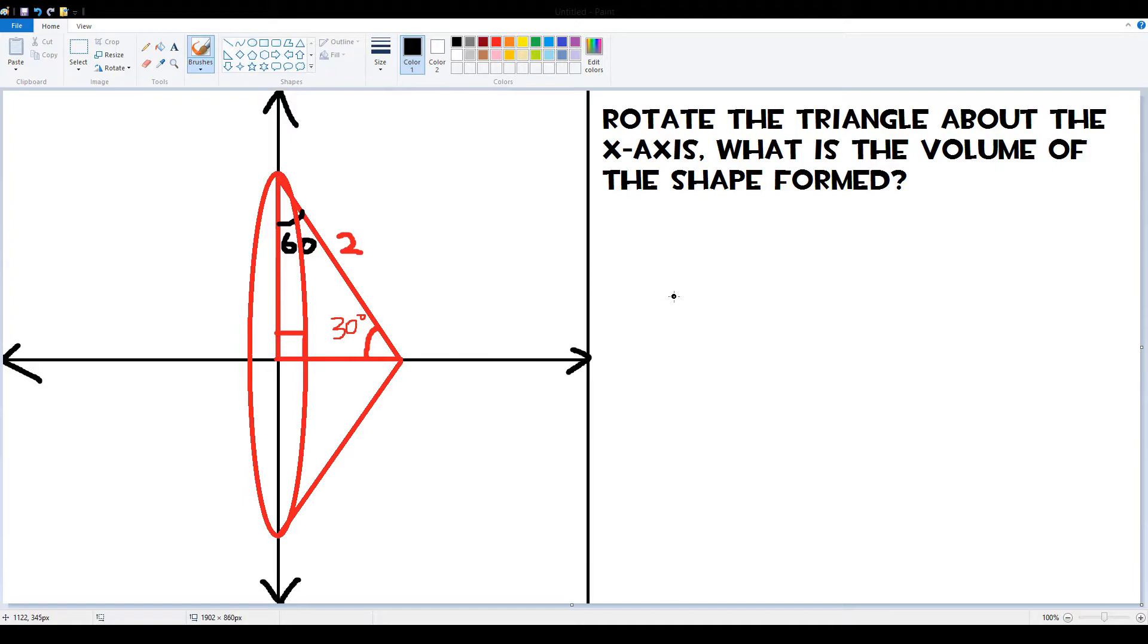And then the volume of the cone, let's get to that first. The volume formula for the cone is 1 over 3 pi r squared. R is this length right there. That's the base, by the way, pi r squared. And then the height, which is right there.